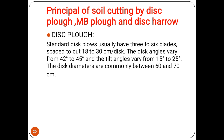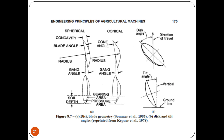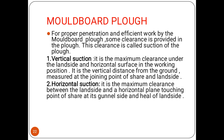Regarding the principle of cutting by disk plow, moldboard plow, and disc harrow: the standard disc plow usually has three to six plates spaced at 28 to 30 centimeters per disc. The disc angle varies from 42 to 45 degrees, and the tilt angle varies from 15 to 25 degrees. The diameter is commonly between 60 to 70 centimeters. You can see the disc blade geometry — the disc angle is the plane of the cutting edge to the direction of travel, and the tilt angle is the plane of the cutting edge to the vertical.